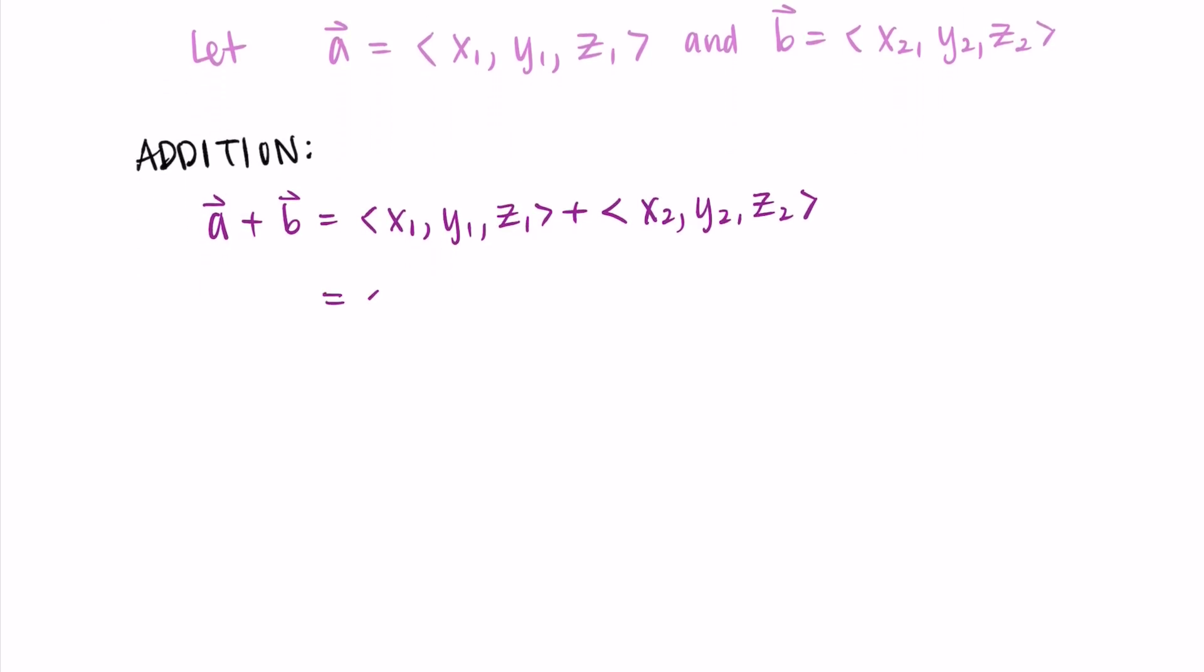Then the way we define this is that we add the x components, x1 plus x2, and that becomes our new x component. Then we add the y components, y1 plus y2. This becomes the new y component. And then z1 plus z2 becomes the new z component.